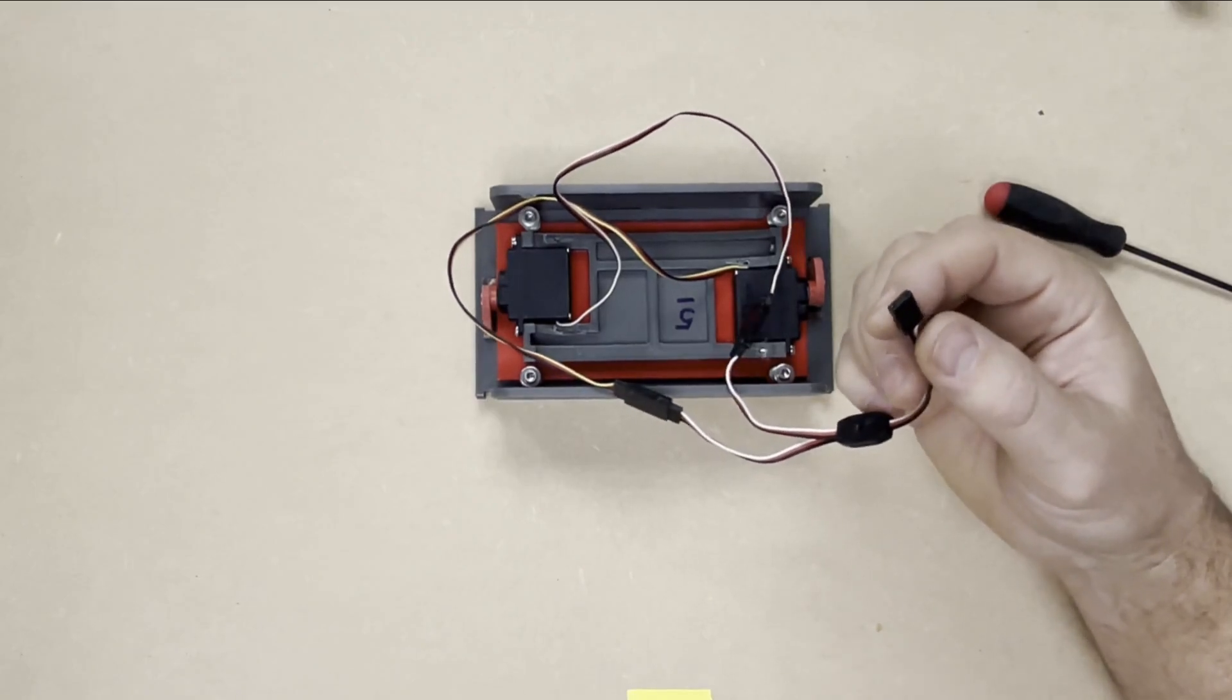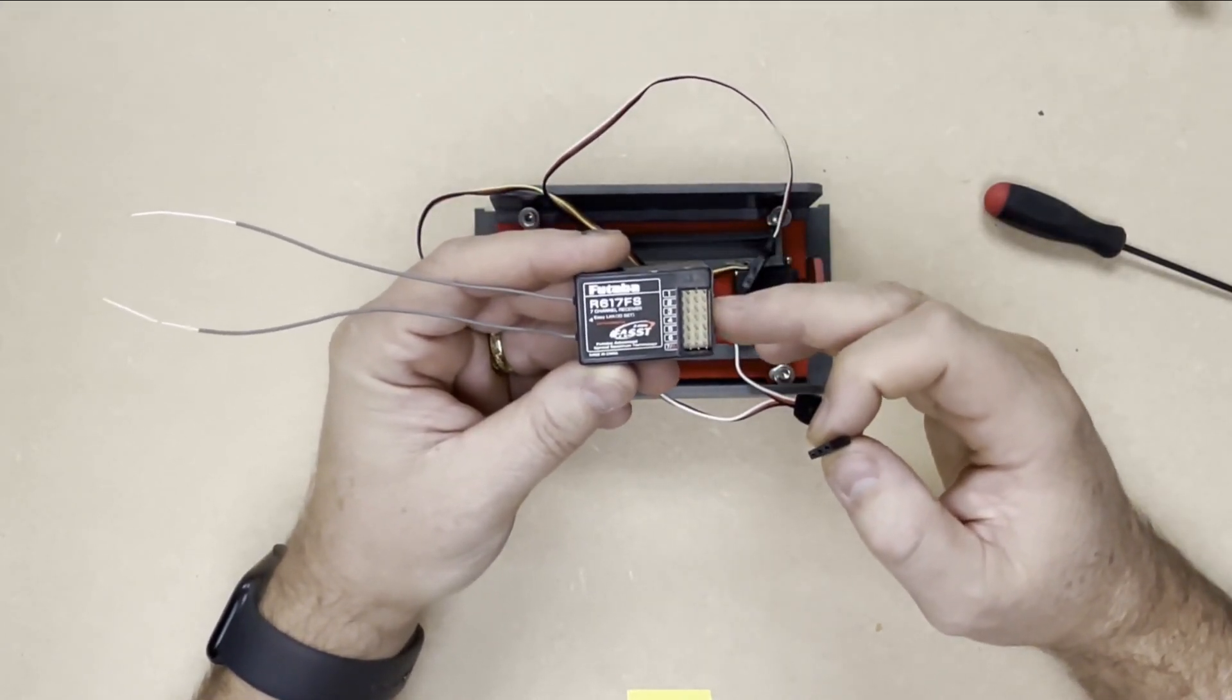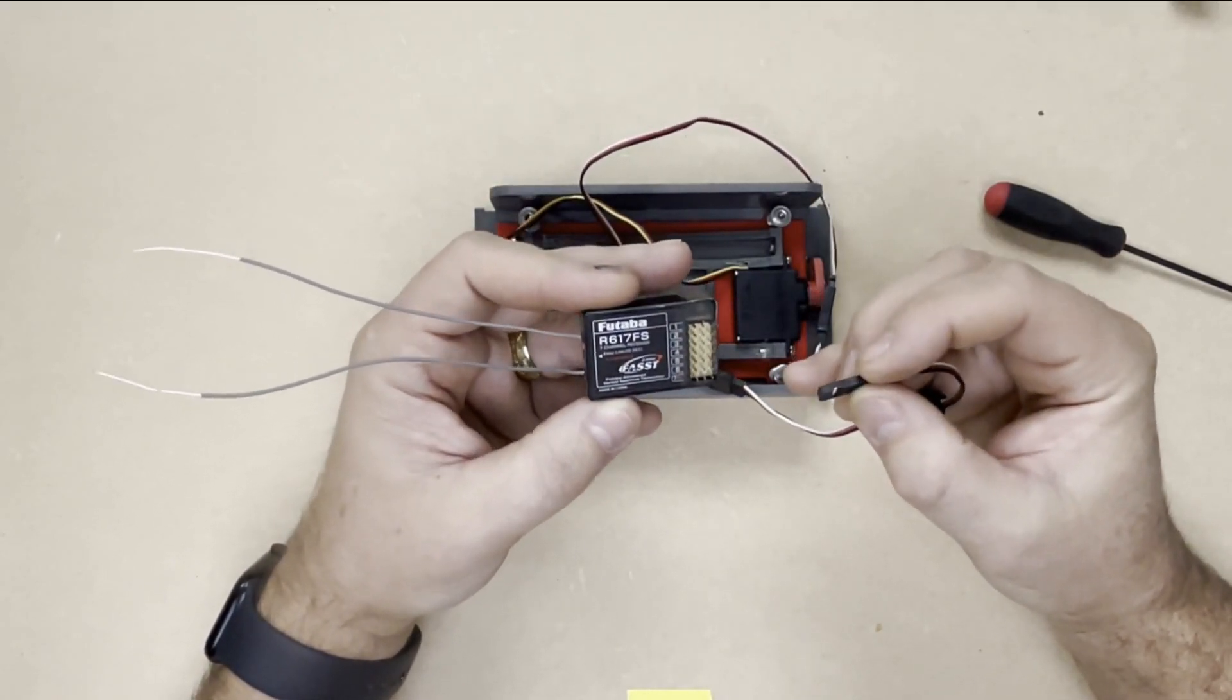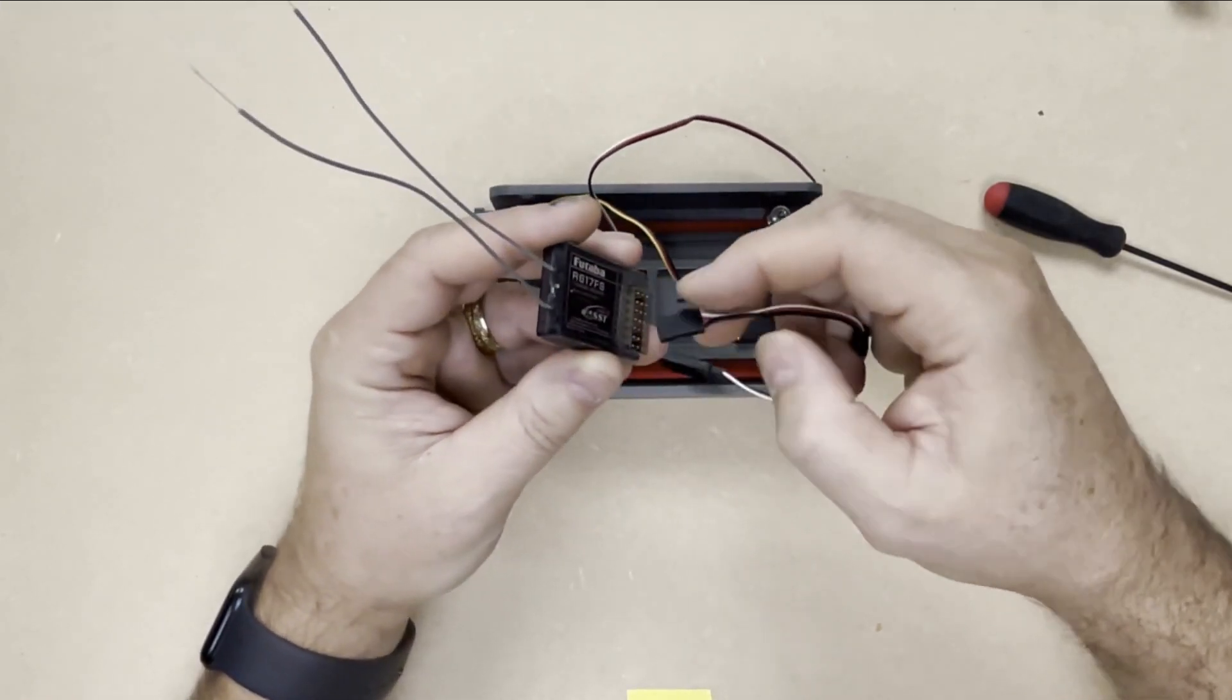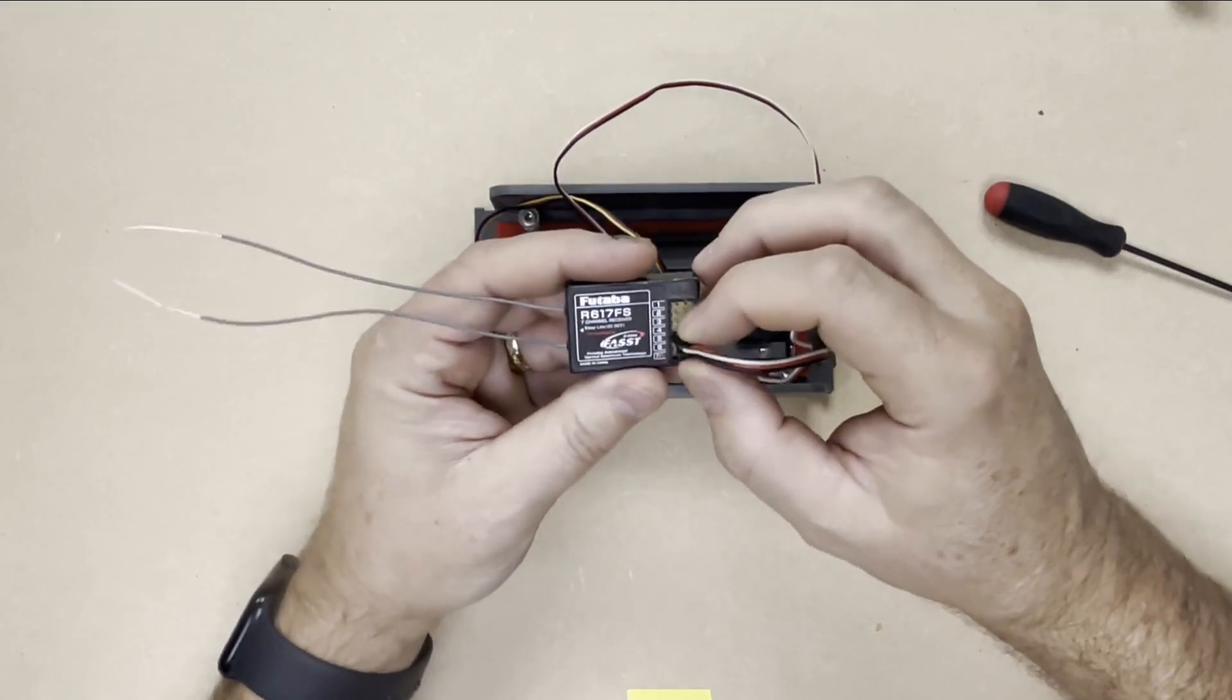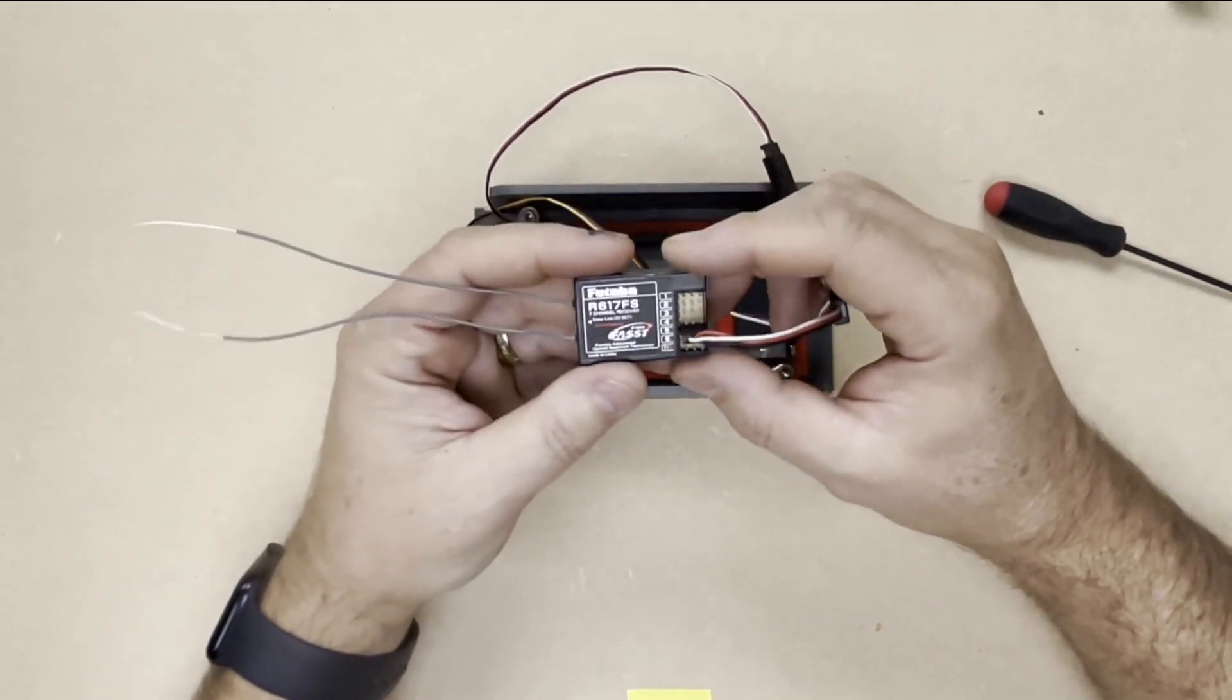You can do the same thing with the servo controller, just with a long cable. But anyways, let me show you what I've got. So this is what's called a receiver, an RC radio control receiver. And then what we're going to do is I'm going to plug it in. I'm going to put that in channel five. I think that's the channel I use when doing this.